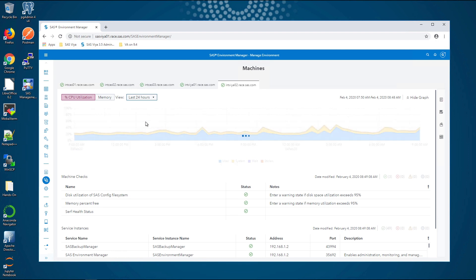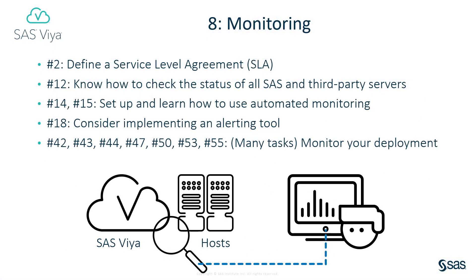Remember that you'll rarely be in front of your computer watching how the system is performing when something unusual happens, so while it's great to be able to see what's happening now, it's much more useful to be able to see what happened in the last few hours and days, and to be able to set up alerts so that you're notified when, for example, a job fails, a process stops running, a disk fills, or a particular message appears in a log file.